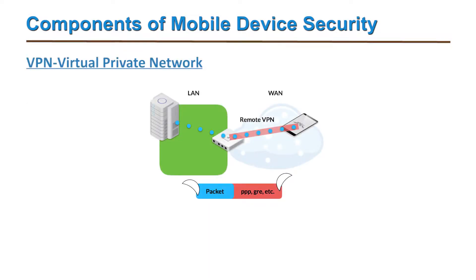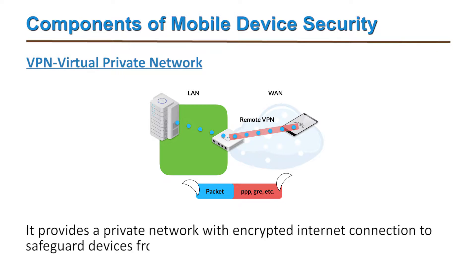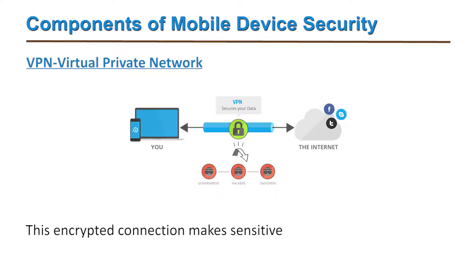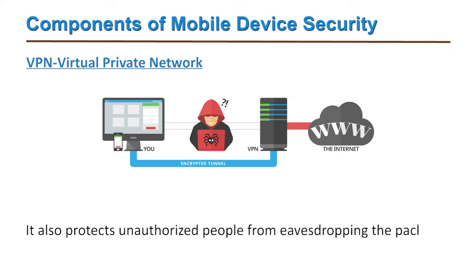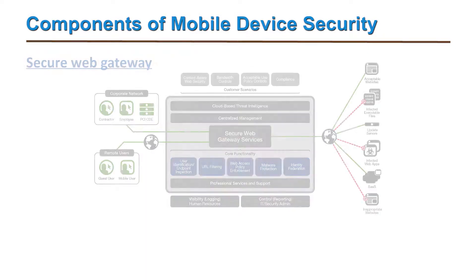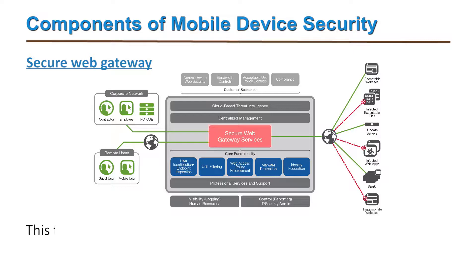The second component is Virtual Private Network (VPN). As the name suggests, it provides a private network with an encrypted internet connection to safeguard devices from unauthorized access. This encrypted connection makes sensitive data transmission safer, and also protects against unauthorized people entering the network and eavesdropping on packets.